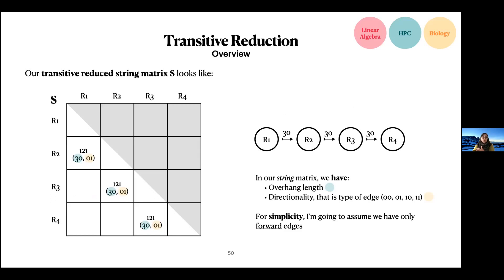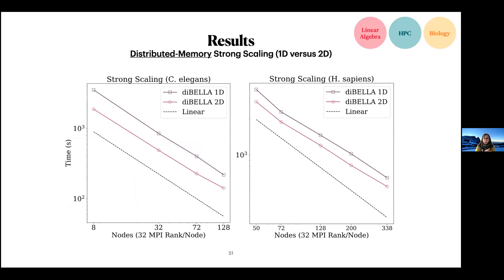Here are the results. Comparing the 2D version with the 1D version on two different datasets, we can see that both scale well and similarly, but the 2D version is consistently 1.5 to 2 times faster than 1D at different scales.